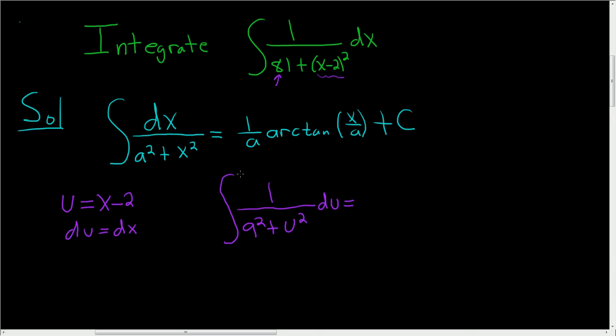And now we can apply the formula. a is equal to 9. So this is 1 over 9 arctan of u over 9 plus our constant C.